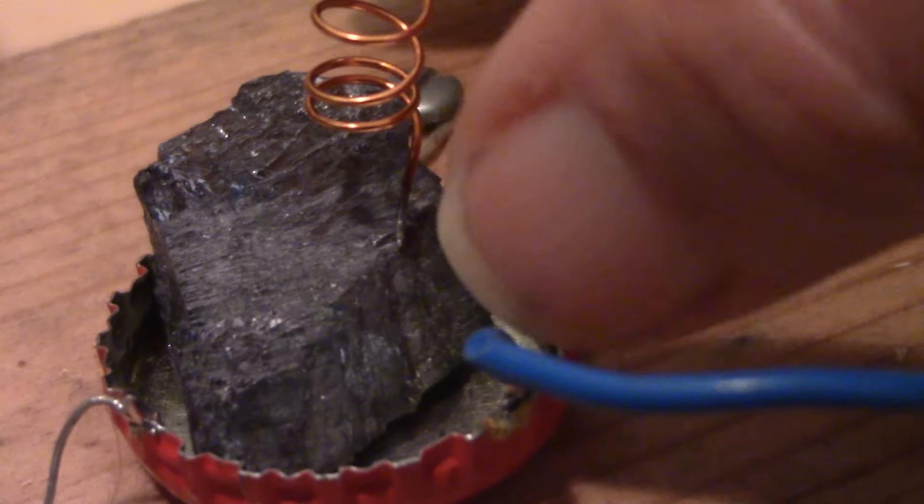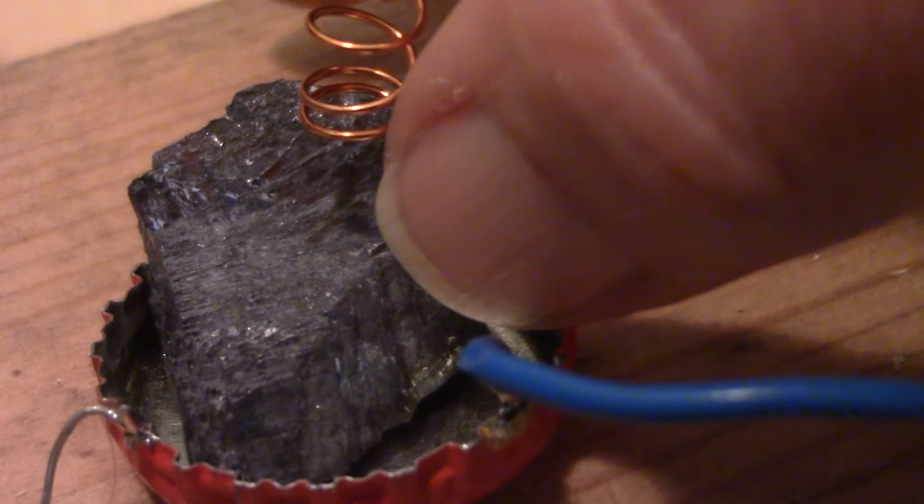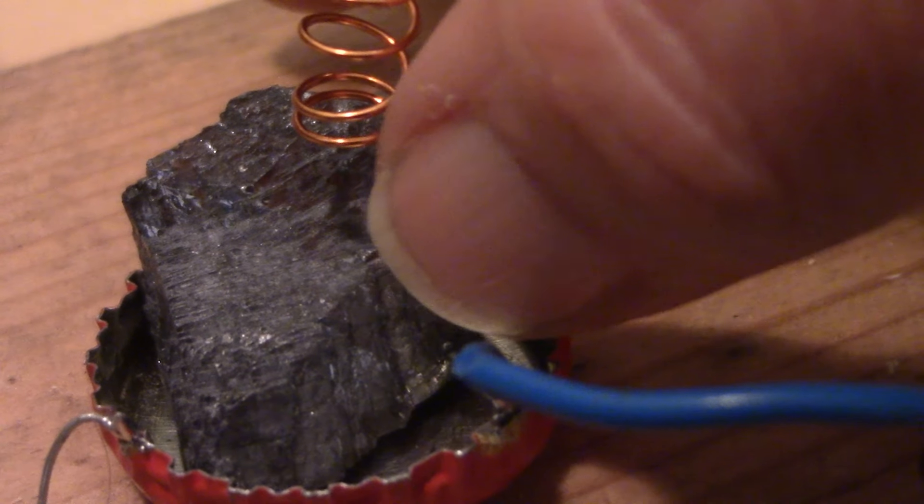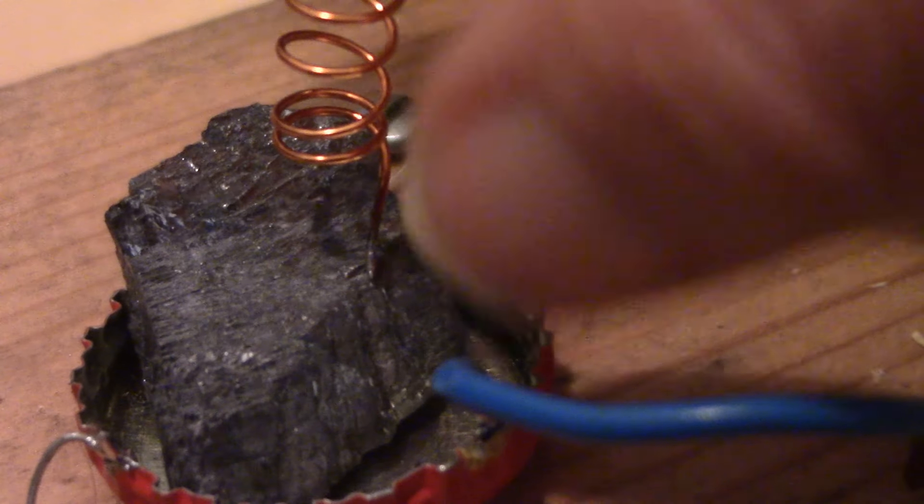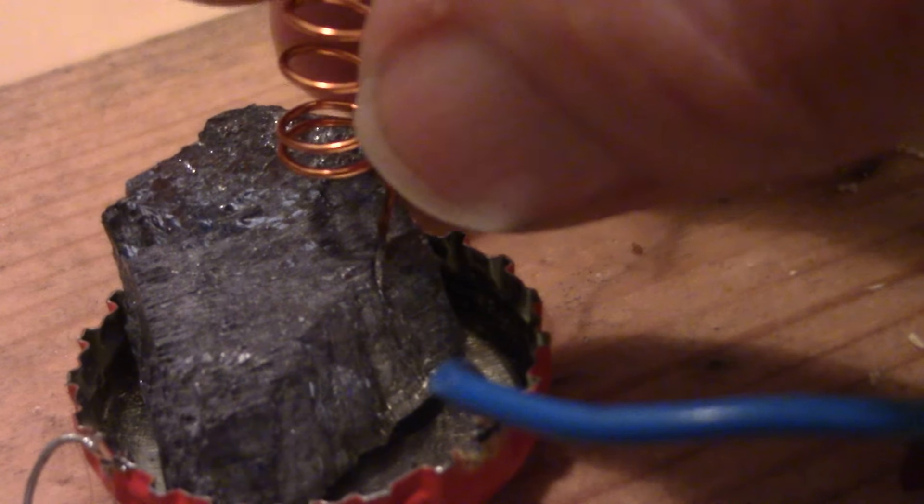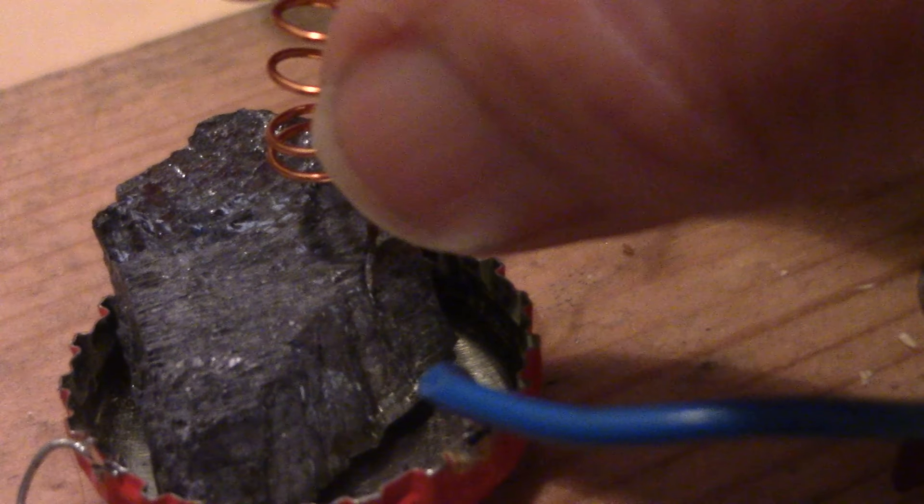The thing you have with the Galena that you don't have with the germanium diode is just the mystery of trying to find a better and better spot. Maybe if you had two cat's whiskers and were trying to get detection across a smaller part of the surface, maybe you'd get even better results. So I'll leave that for you to try if you decide to build something like this.